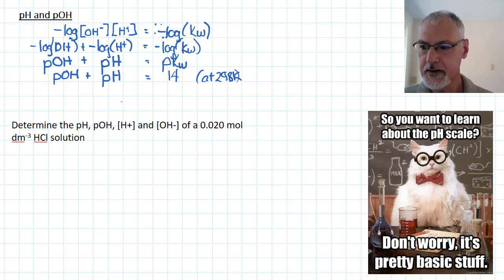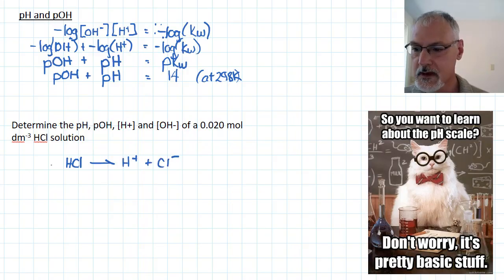Let's now employ this relationship in this problem. Determine the pH, pOH, H+, and hydroxide concentrations of a 0.020 mole per decimeter cubed solution of HCl. So let's begin by quickly putting down the ice table for HCl. You might recall that we use a one-way arrow for a strong acid. And the initial, the change, and the equilibrium. So we start with 0.020, and none of this, and none of this.